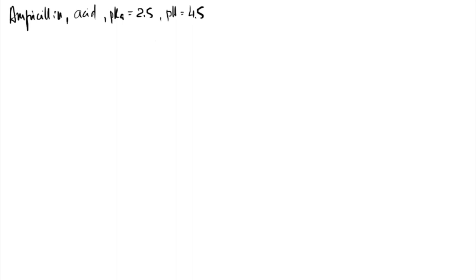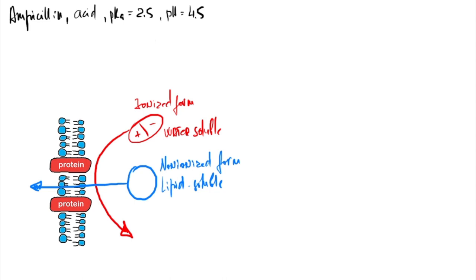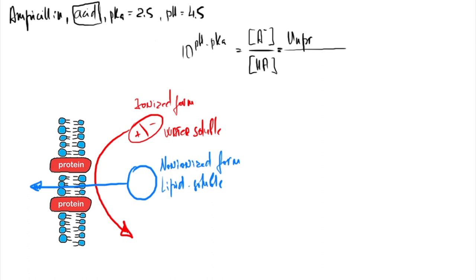What percentage of ampicillin will be in the lipid-soluble form in the duodenum at a pH of 4.5? We remember that the ionized form is unable to penetrate cell membranes (water-soluble), and the non-ionized form penetrates well (lipid-soluble). We are looking for the lipid-soluble (non-ionized) form. Using the Henderson-Hasselbalch equation for weak acids: 10^(pH − pKa) = ratio between ionized and non-ionized forms, or unprotonated to protonated forms.